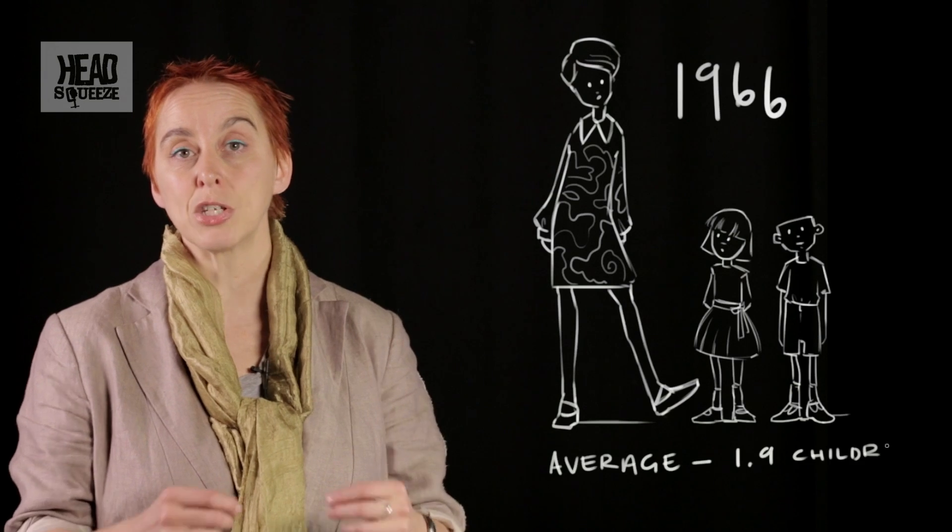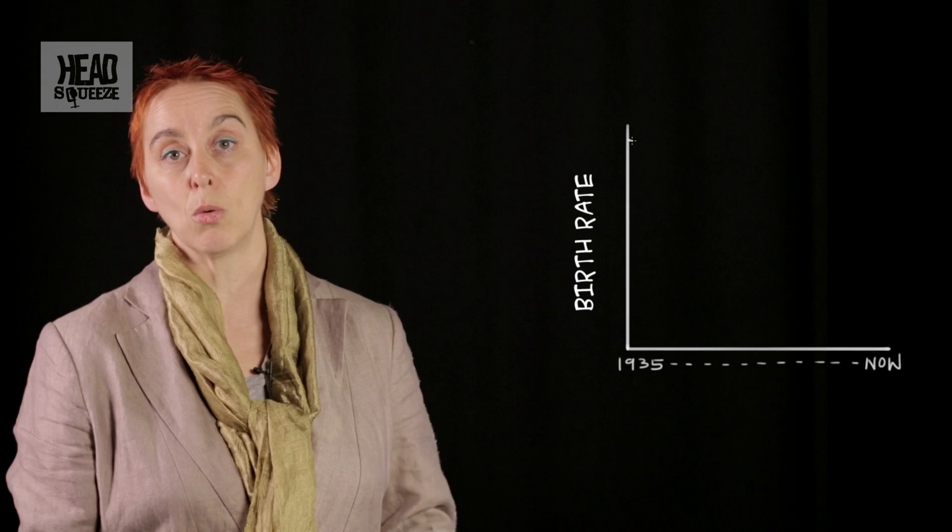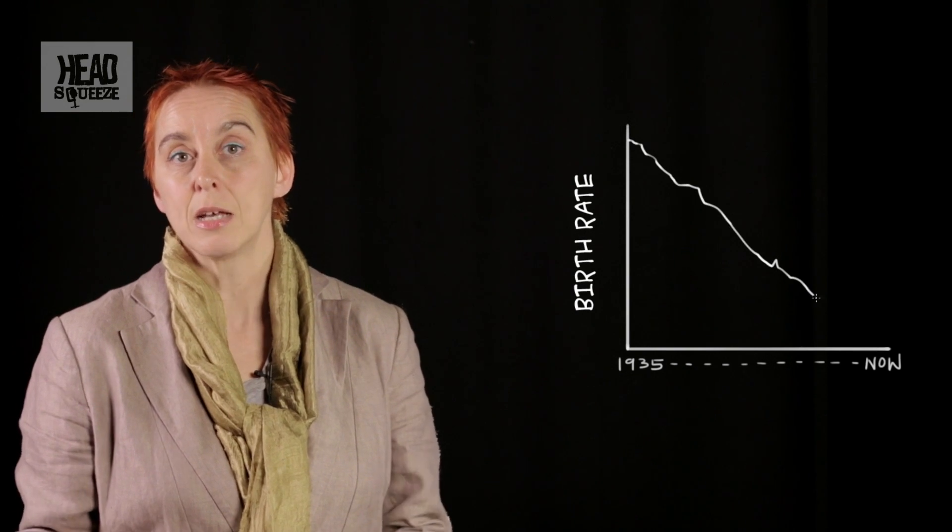And in fact, if we look at cohorts, people born in the same year, then ever since the cohort of 1935, the birth rate per woman has been dropping. And ever since the cohort of 1958, people have been having less than 2 children per woman. So not enough to replace both parents.